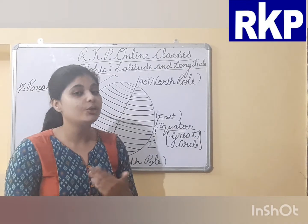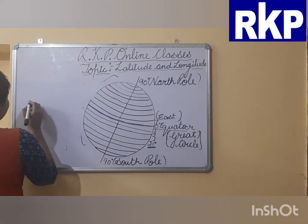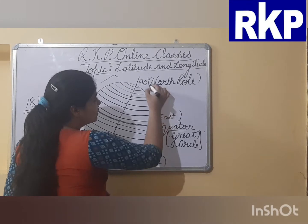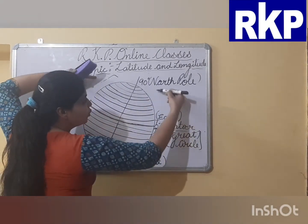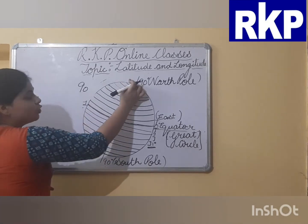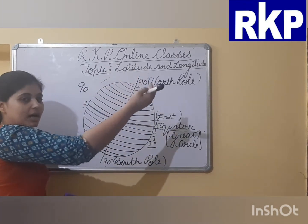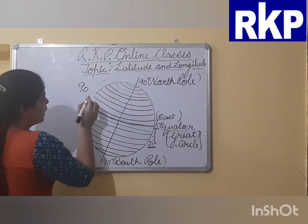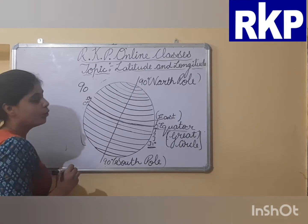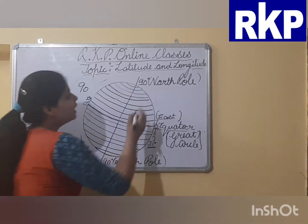Now, how many latitude lines are there on the earth? There are 181 latitude lines. This is 0 degree equator, and the north pole is 90 degrees north. From the equator moving toward the north pole, there are 90 latitude lines. As we cross each latitude line moving north, we call them 1 degree north, 2 degree north, 3 degree north, 4 degree north, and so on — 50 degree, 60 degree, 70 degree — and finally we reach 90 degree north.